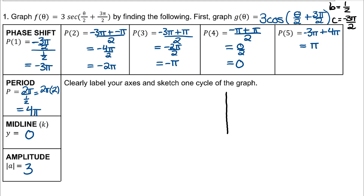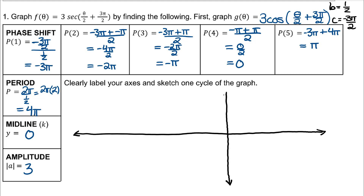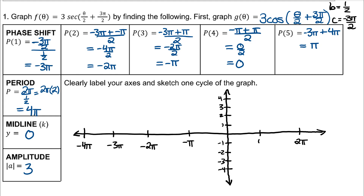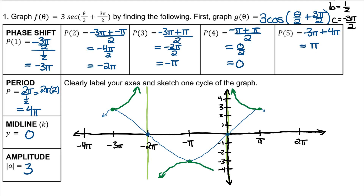Now graph g(θ). Remember, the midline intercepts of cosine become vertical asymptotes for secant, and the upward U shares a point with cosine's max, and the downward U shares a point with cosine's min. Now you have graphed one period of secant. Knowing the pattern, you could continue graphing more than one cycle. You can erase the corresponding cosine function, or you can keep it on the graph.